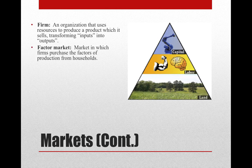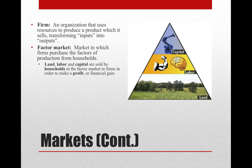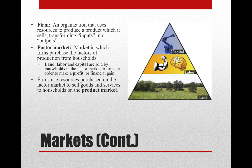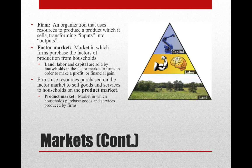Factor market is defined as a market in which firms purchase the factors of production from the households. Land, labor, and capital are sold by households in the factor market to firms in order to make a profit or financial gain. Firms use resources on the factor market to sell goods and services to households on the product market. The product market is the market in which households purchase goods and services produced by the firms or businesses.